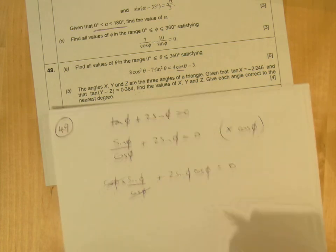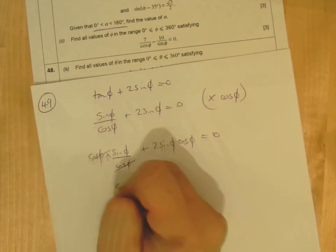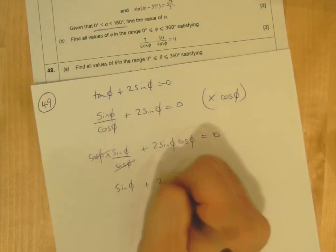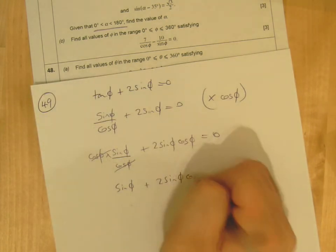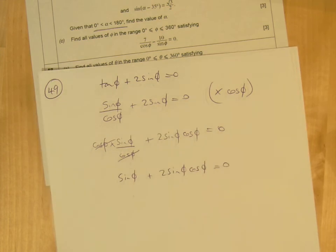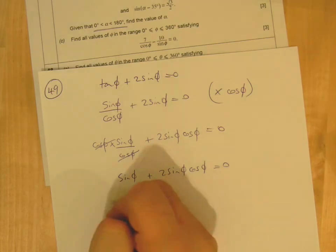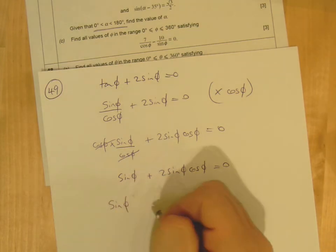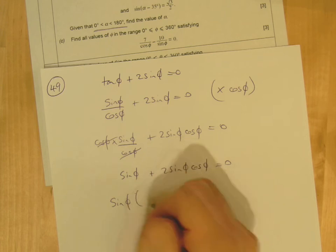So I end up having sin φ + 2sin φ cos φ = 0. To solve this, you need to see sin φ in each term, so you factorize out sin φ: sin φ(1 + 2cos φ) = 0.